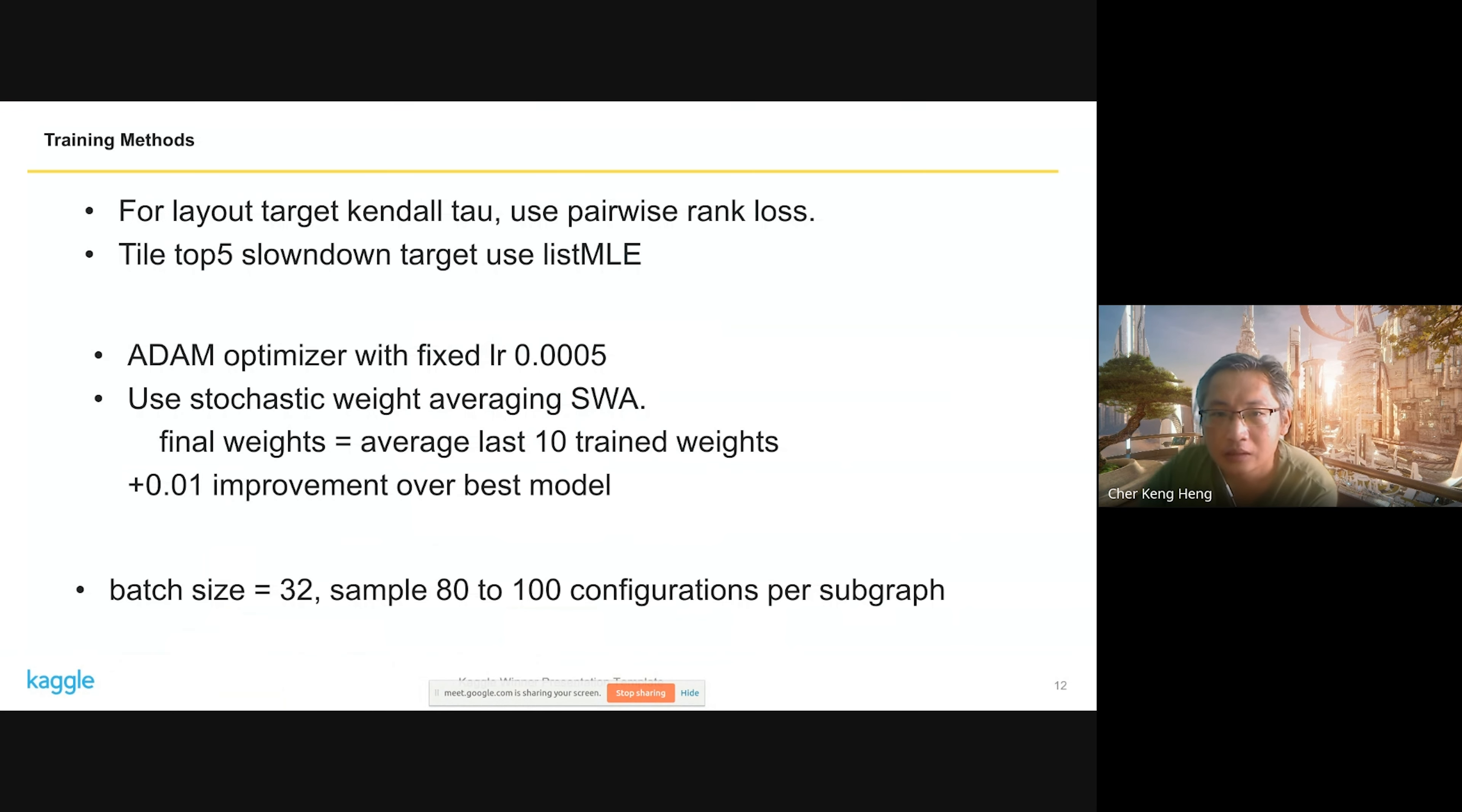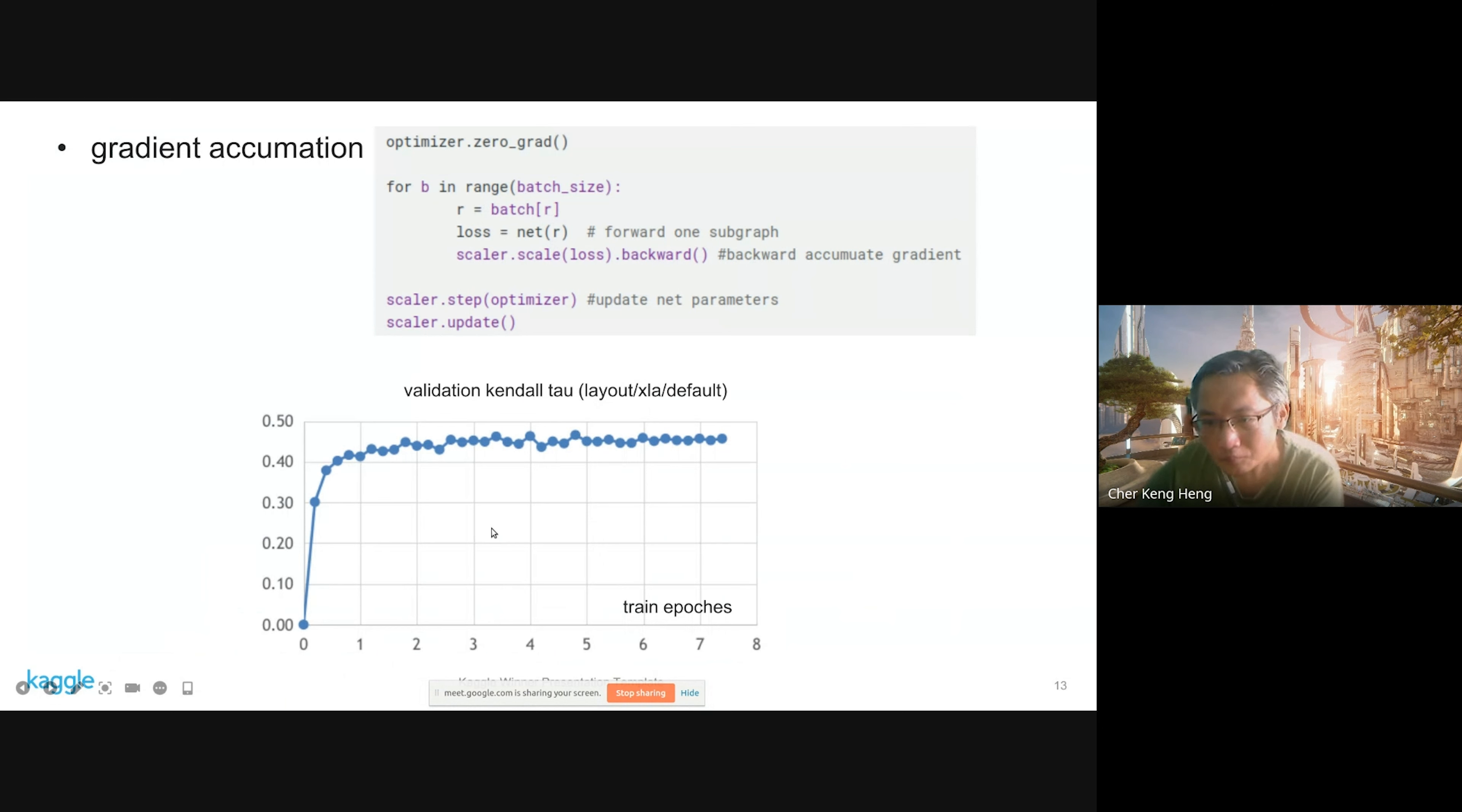For training methods, I mentioned layout uses Kendall tau, so it's pairwise rank loss. Top five slowdown uses this MLE. I use a fixed learning rate of 0.005. I did not do scheduling because I find the number of train samples is not enough. Instead of scheduling, I average the last ten train weights as the final model. This improved the results over the best model. Batch size I used 32, and for each graph I can sample 80 to 100 configurations. The key point is I'm able to use a large number of configurations per subgraph.